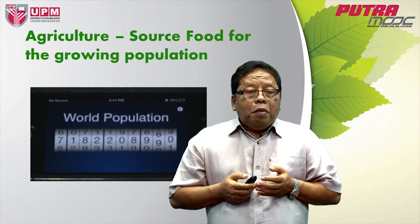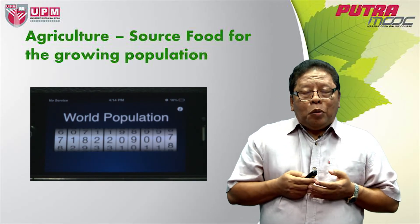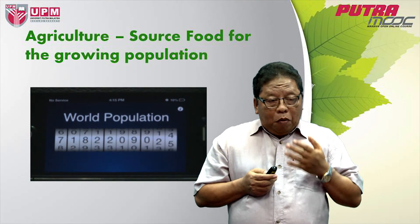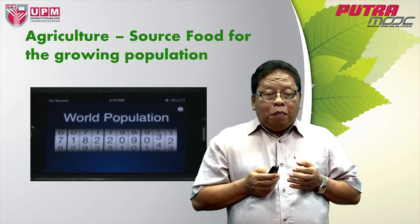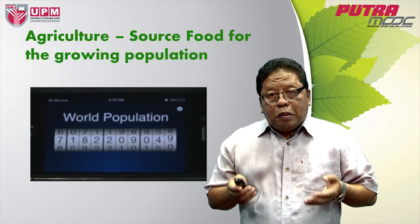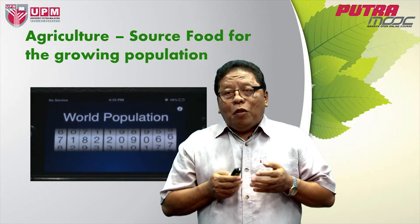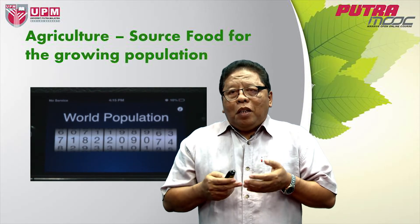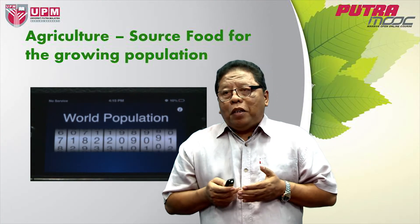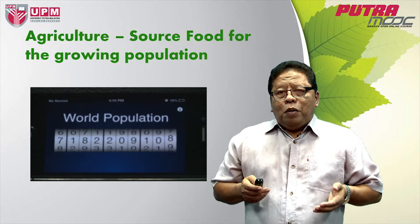What I'm showing you is the world population clock, which shows the population in real time. The world population now is more than 7 billion, and it keeps on increasing at a very fast rate — at the rate of 2.4 people per second. If you calculate over one year, there will be at least 74 million people added to the world, and all these people require food.